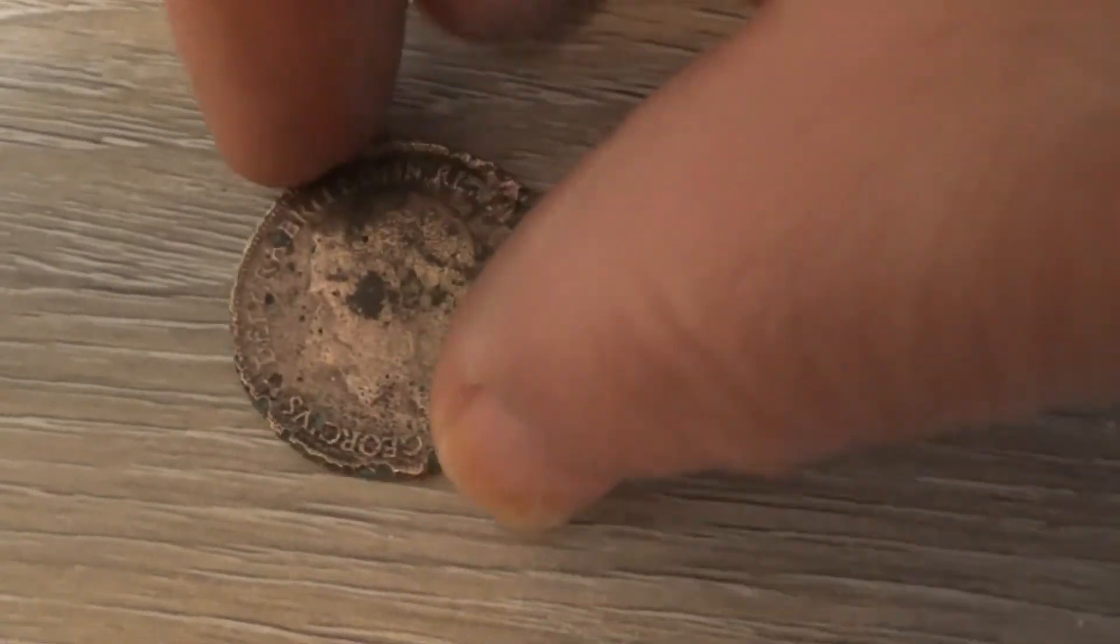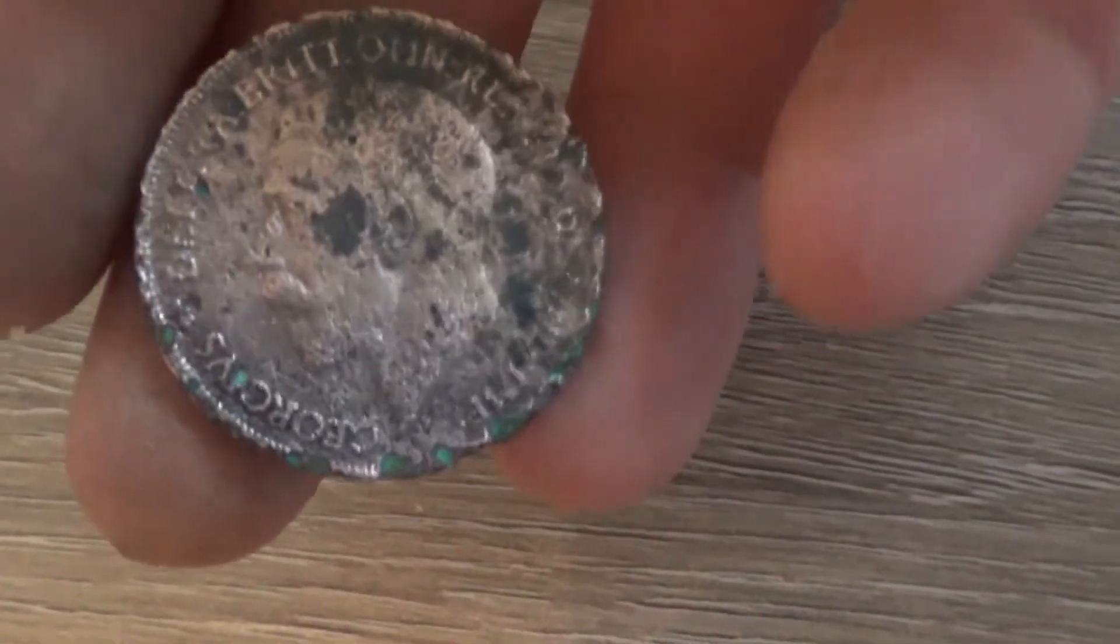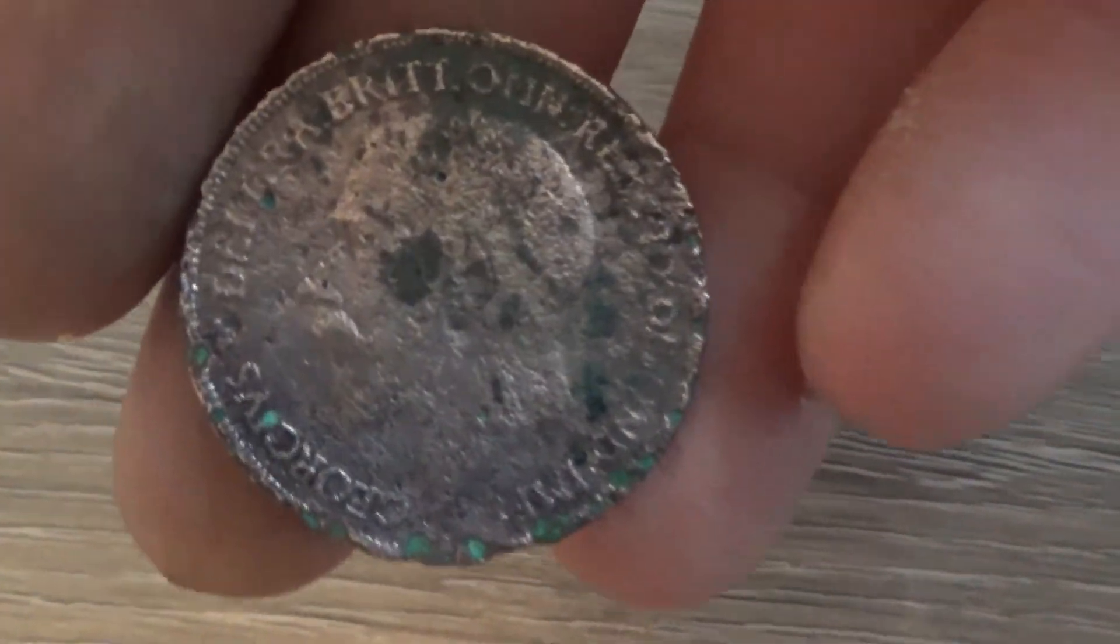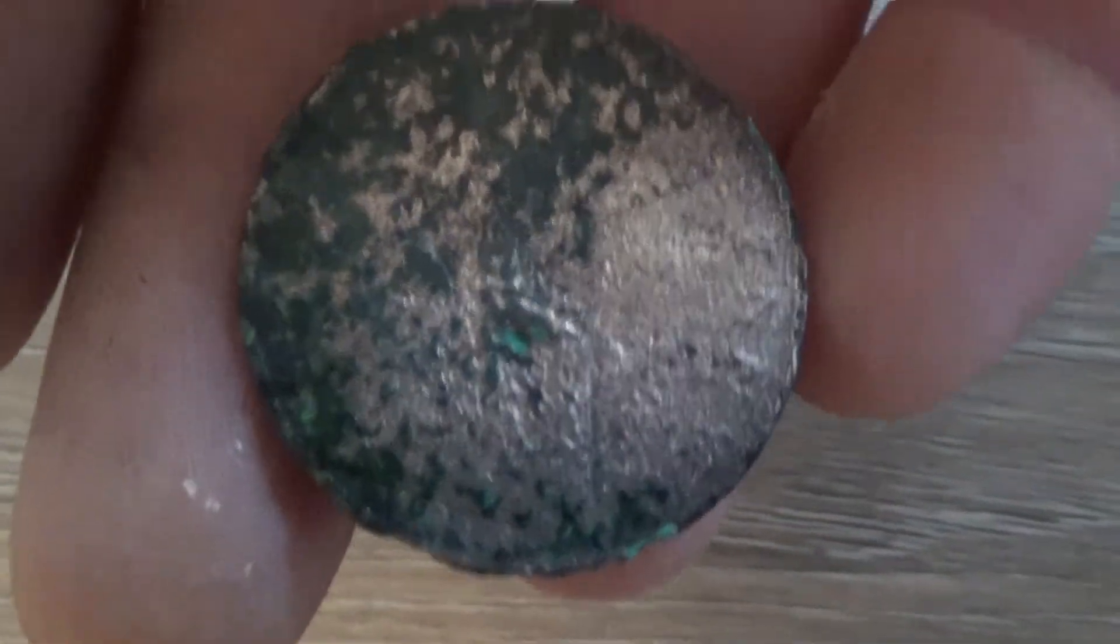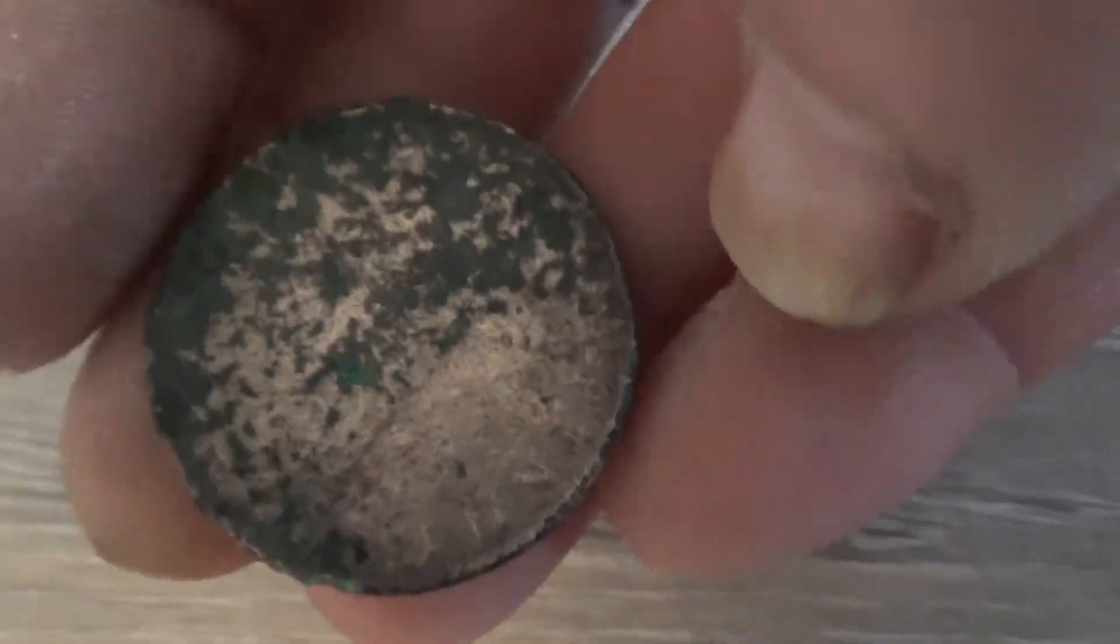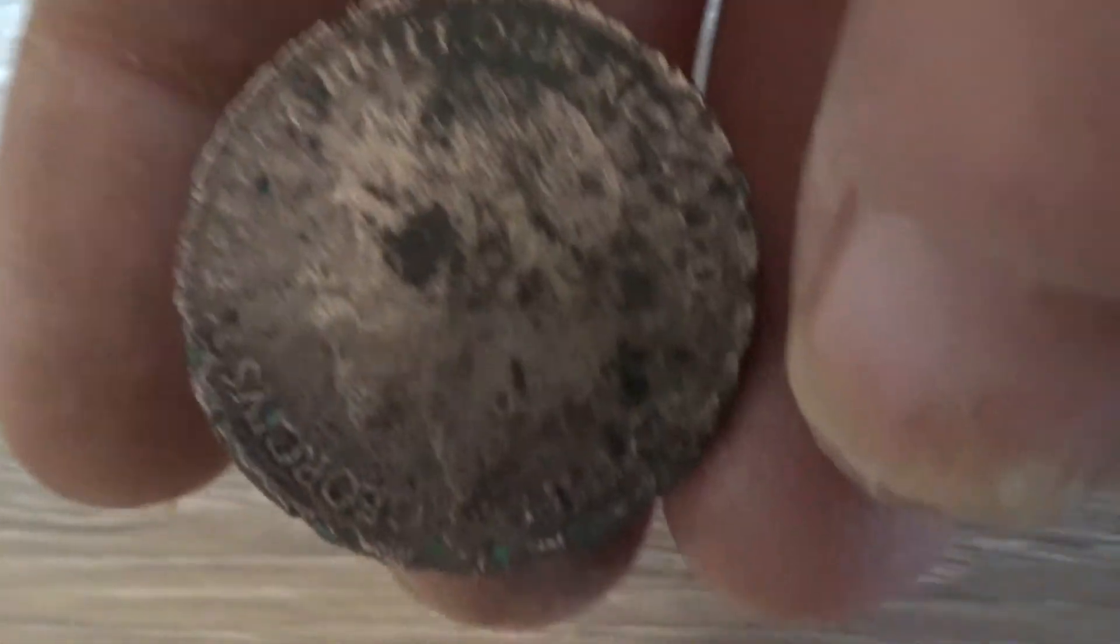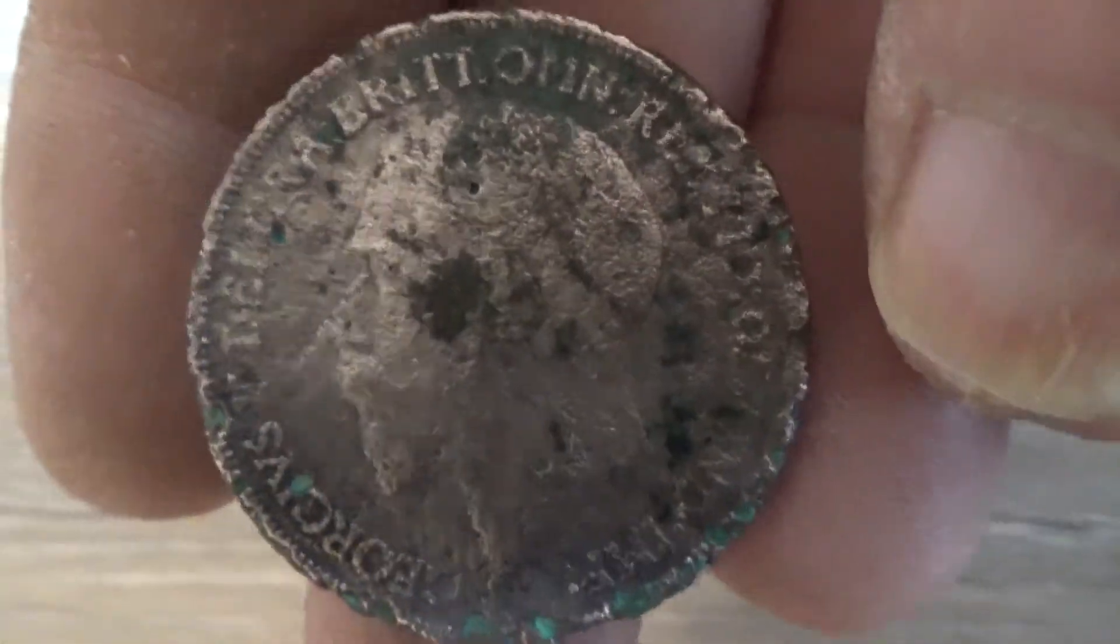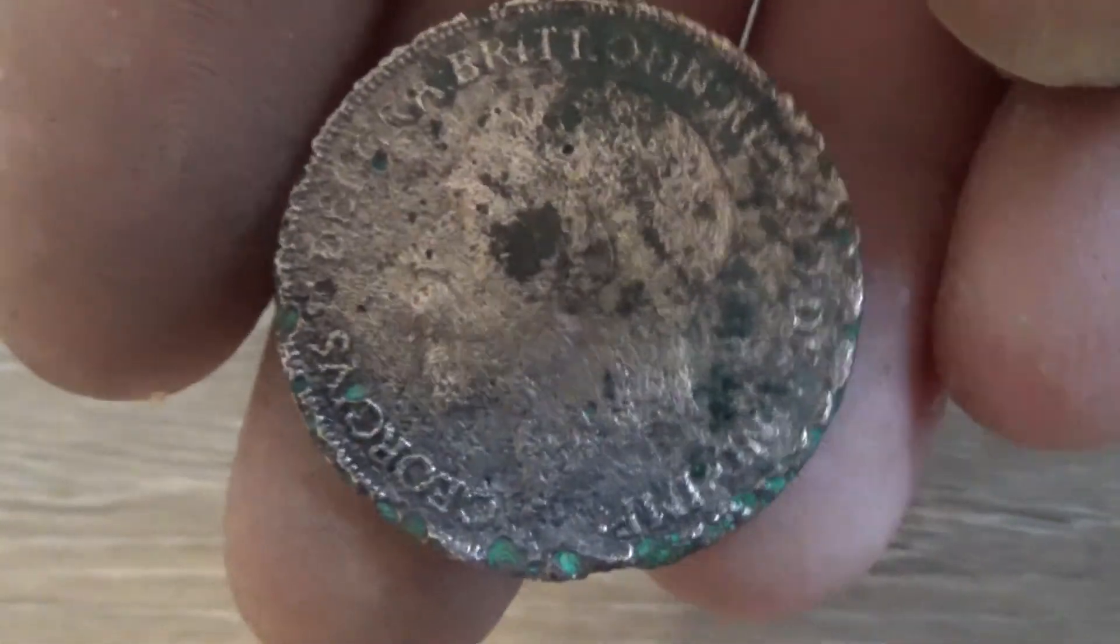Okay, this is the coin we've just cleaned. The portrait is coming out alright, it's just the other side is not so good really. Anyway, this is how you clean a coin with electrolysis. Not bad, I'm happy with that.